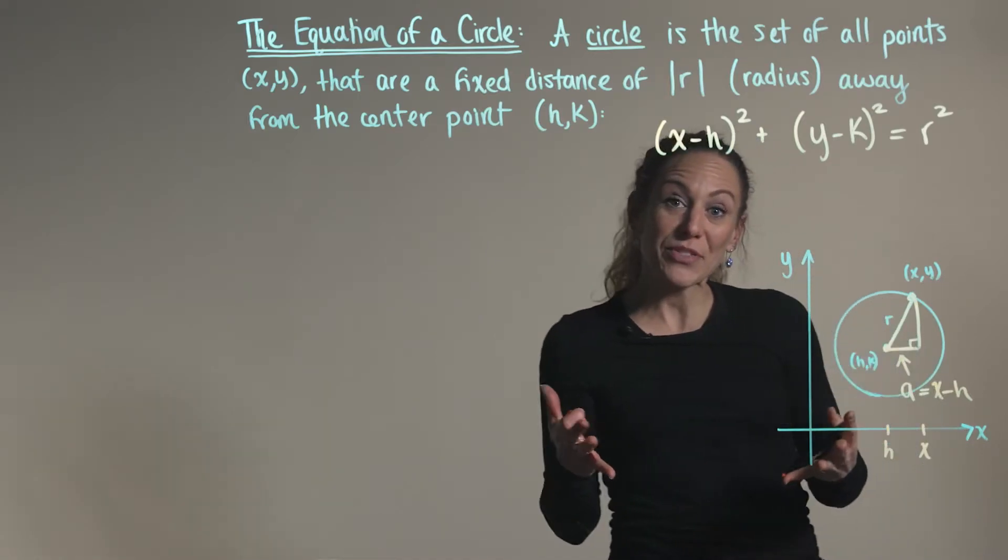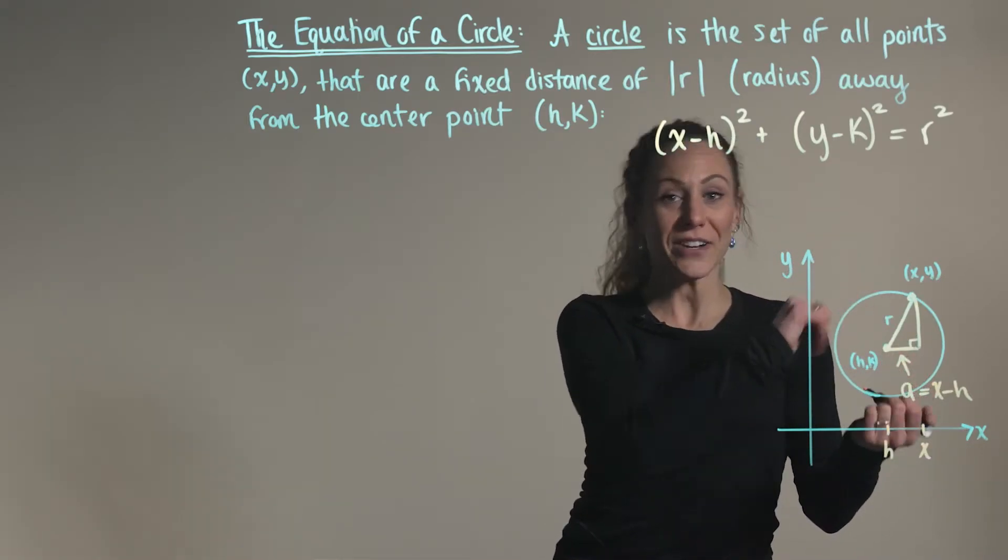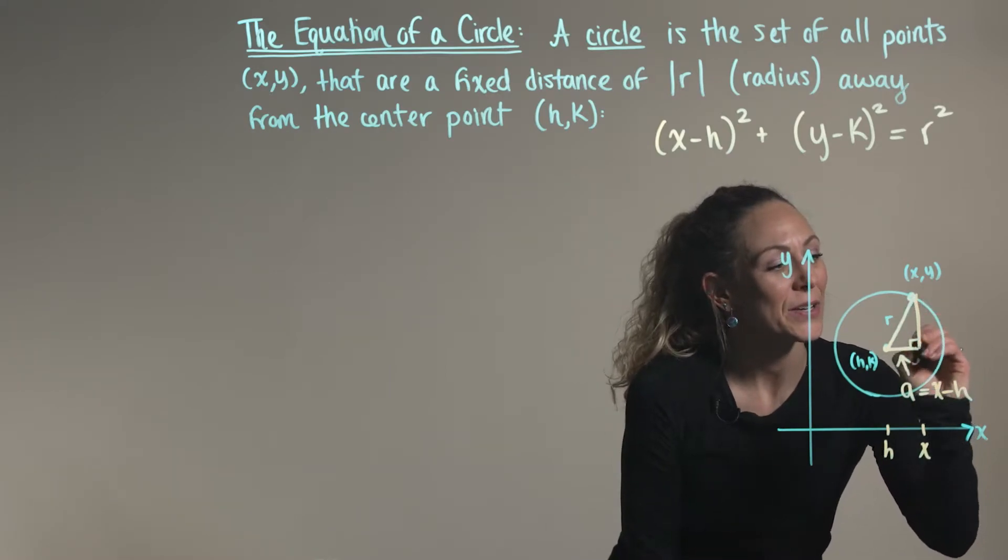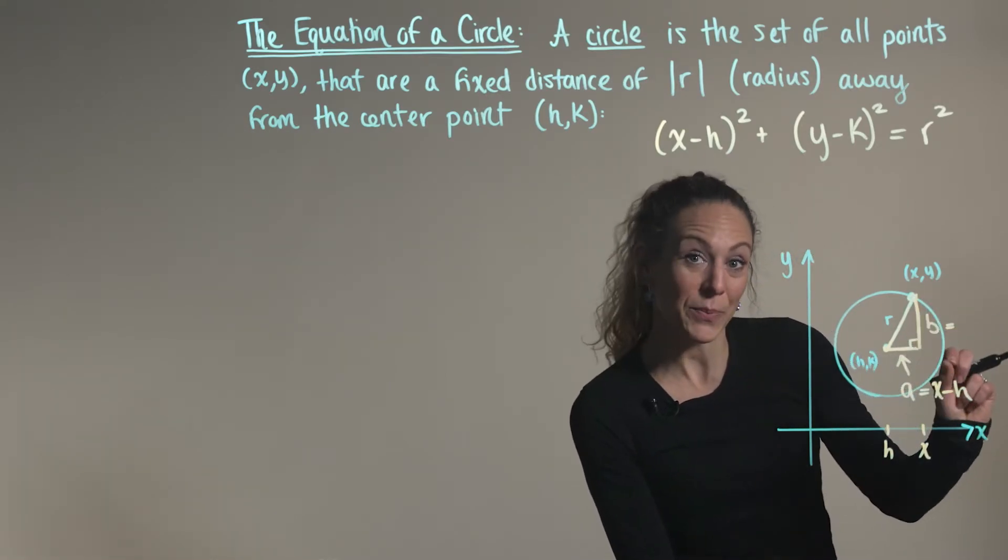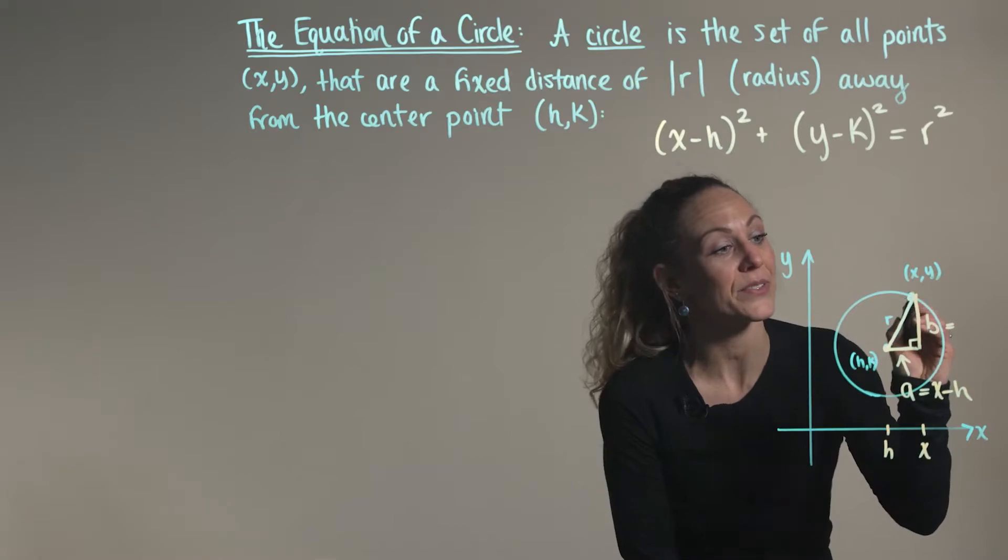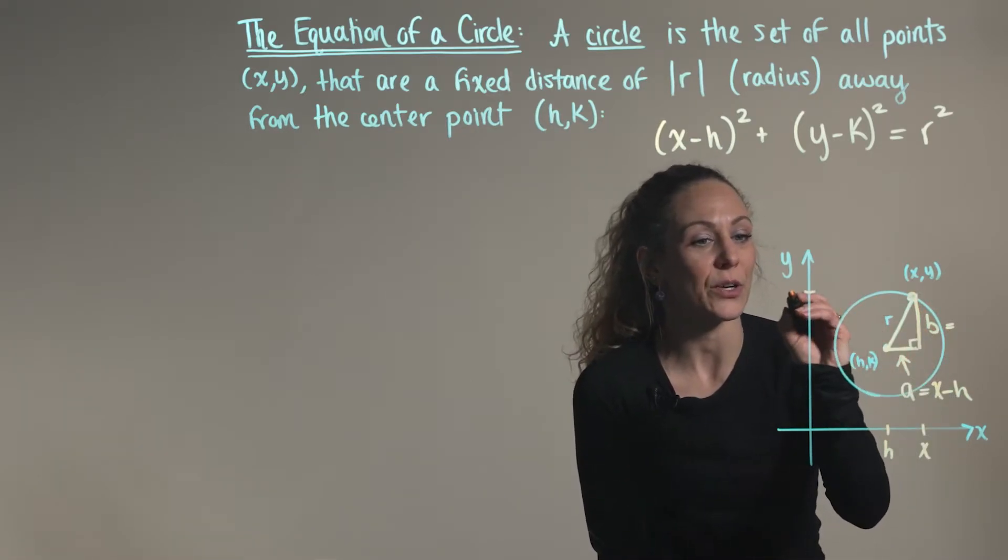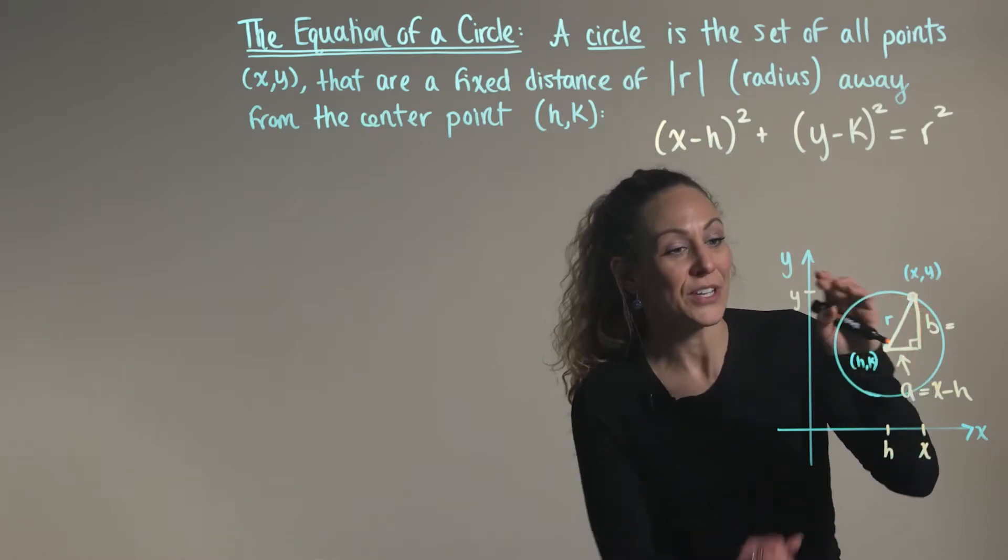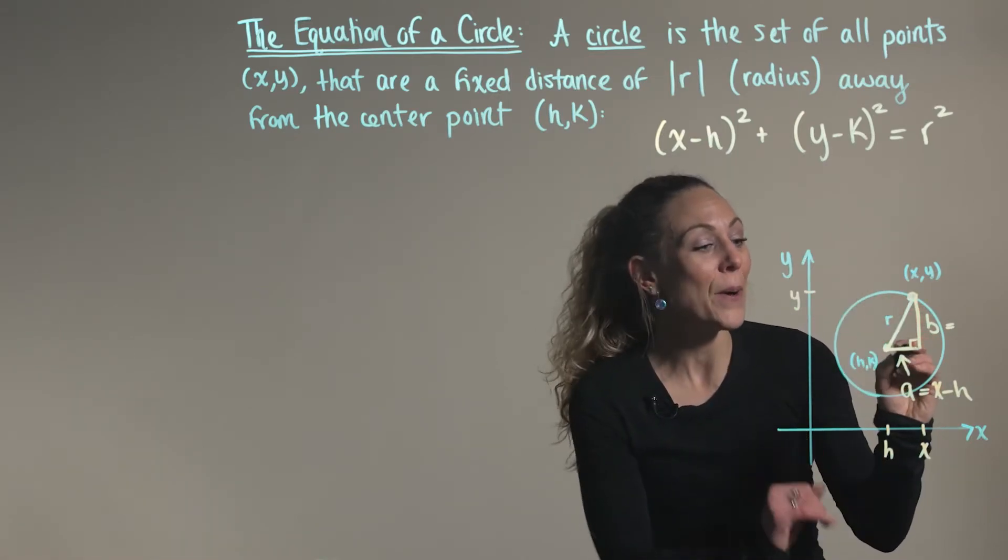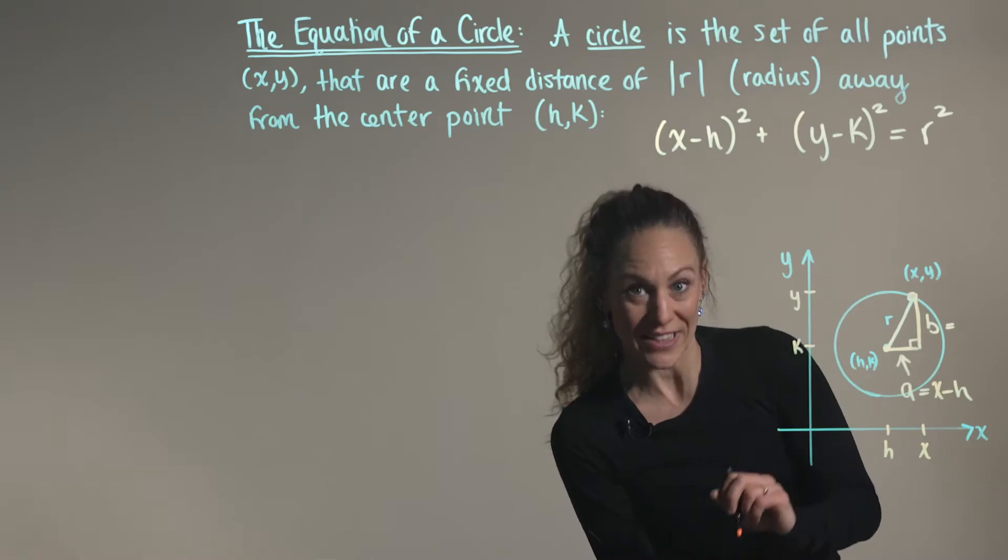And the same thing for y, for the height of our right triangle. We'll call this height here b. And b is representing the change in our y values. So starting with our fixed point on the circle, here's our corresponding y value. So it's the length of y minus the length of k.